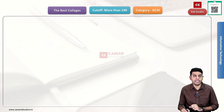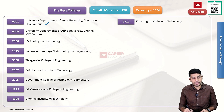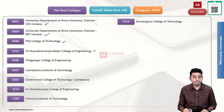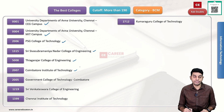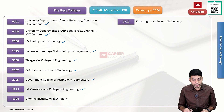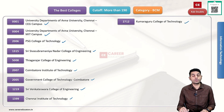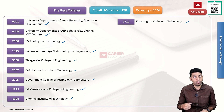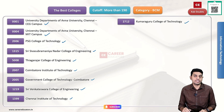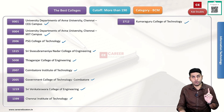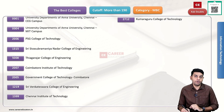The next category we have is BCM category: 0001 CEG Campus, 0004 MIT Campus, 2006 PSG College of Technology, 1315 Sri Sivasupramani Nadar College of Engineering, 5008 Thyagarajar College of Engineering, 2007 Koyamathur Institute of Technology, 2005 Government College of Technology, 1219 Sri Venkateshwara College of Engineering, 1399 Chennai Institute of Technology, 2712 Kumarakuru College of Technology.